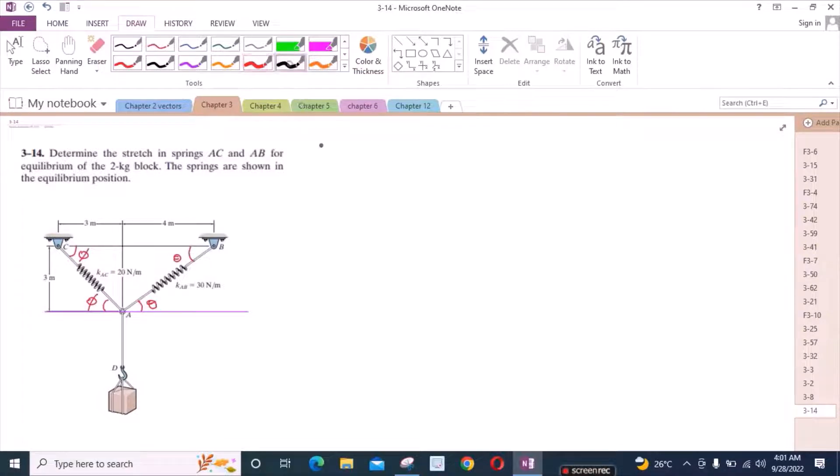So for theta, we can use the ratio tan theta, where tan theta equals the perpendicular which is 3 meters upon the adjacent which is 4 meters. From here, theta is equal to 36.86 degrees.